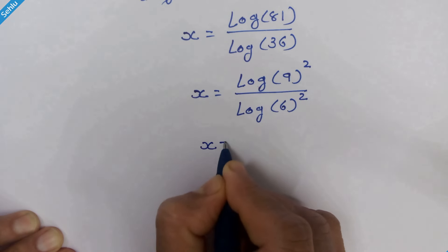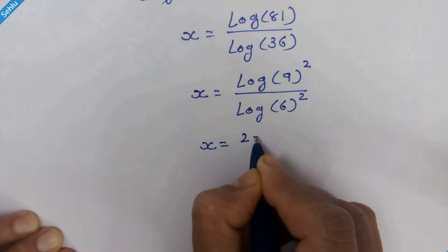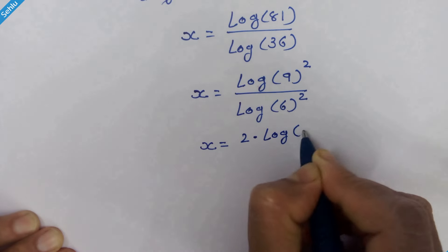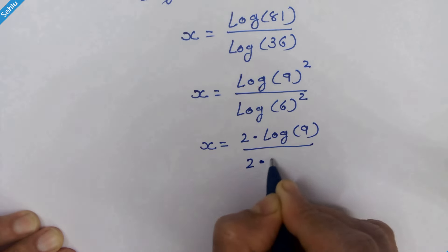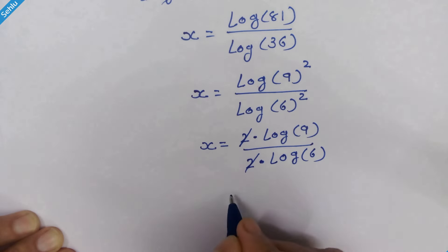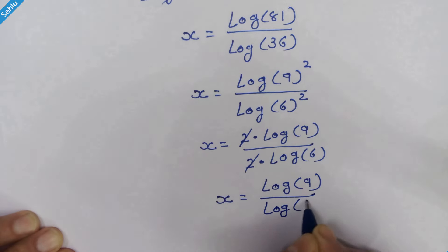So x equals 2 times... the two gets cancelled out. Now we have x equals log of 9 upon log of 6. This is the answer, but let's go a little further.